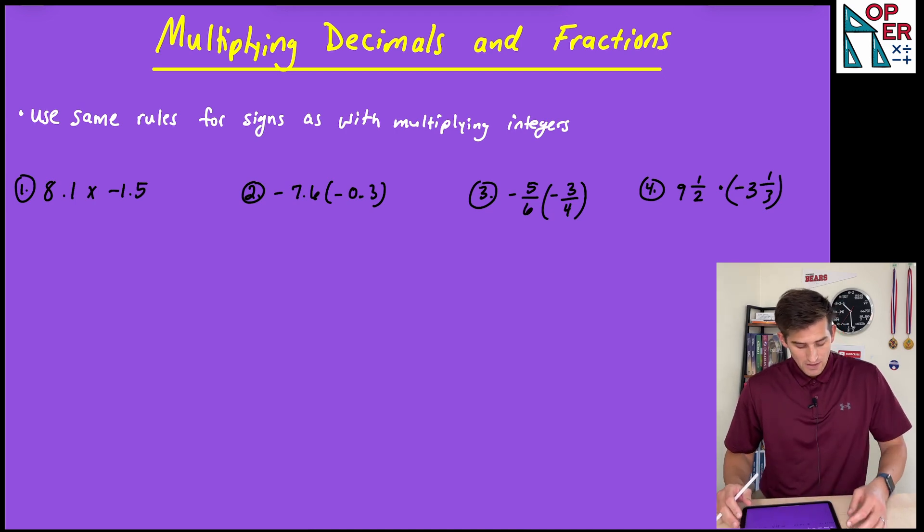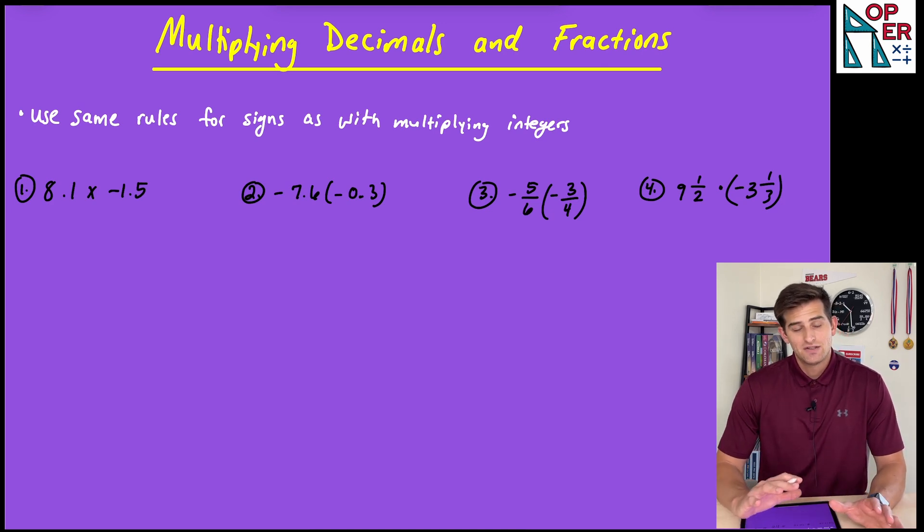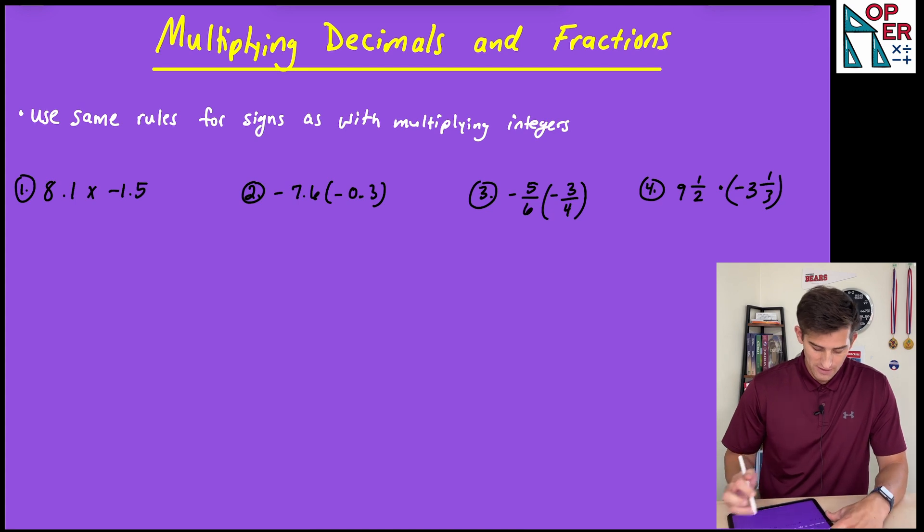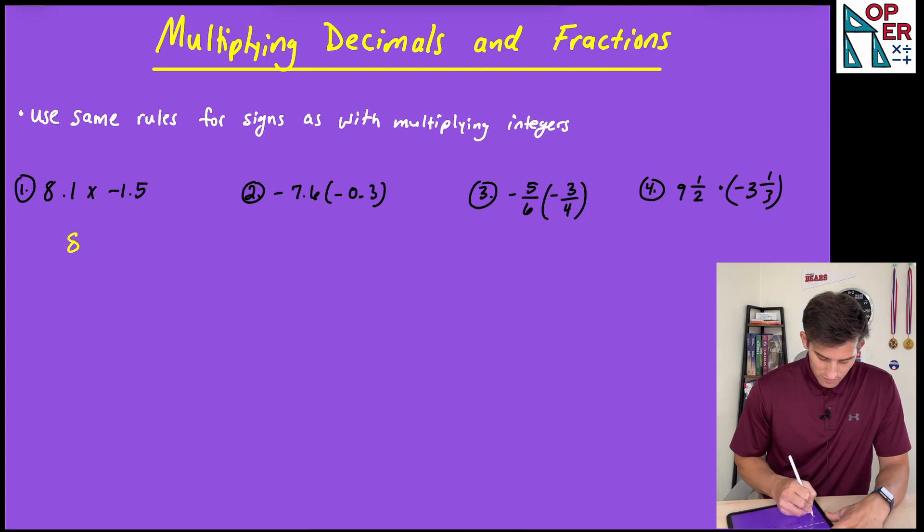So let's jump in with number one. So we have 8.1 times negative 1.5. So I know that my answer should be negative because we have alternating signs here. So let's just keep that in mind. But for now we can just do 8.1 times 1.5.